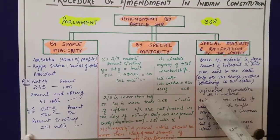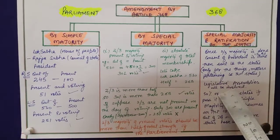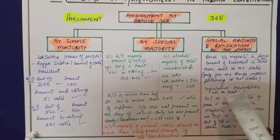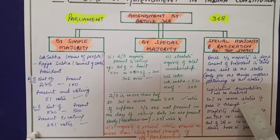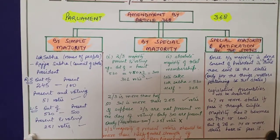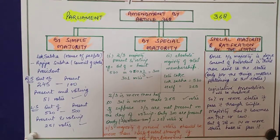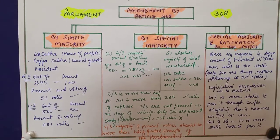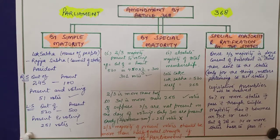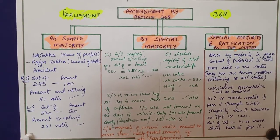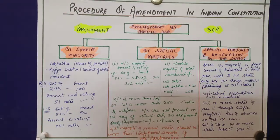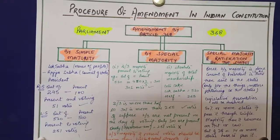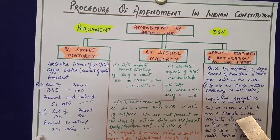So, here the legislative assemblies will be involved. They will be involved in all states, and if 50% or more states — that is, 14 or more than 14 out of the 28 states in our country — pass it through simple majority, then it becomes an act or law.